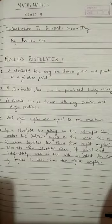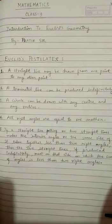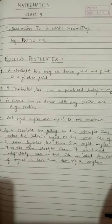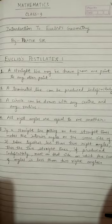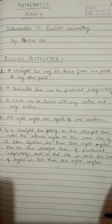The first postulate is: a straight line may be drawn from one point to any other point. Whenever you draw any two points on the same plane surface, you can easily join those two points using a straight line only.